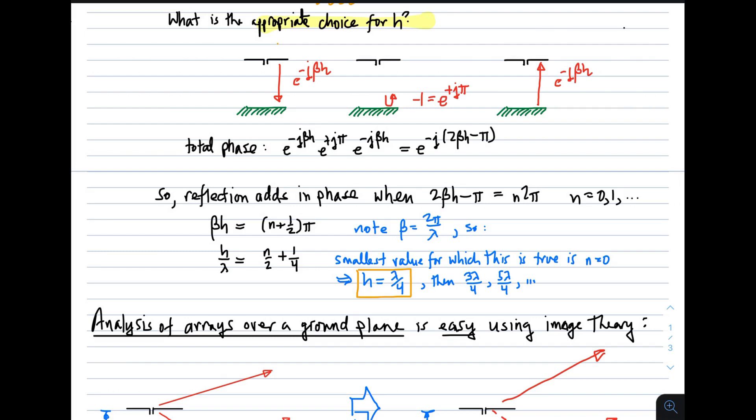Let's answer that question. It's actually not hard to answer. Let's think of this in the transmit case. In the transmit case, we have this dipole, distance h above the ground plane, so radiation from the dipole experiences a phase shift, and that phase shift is equal to e to the minus j beta h, where beta is the phase propagation constant. So the phase shift will be minus beta h to get to the ground plane.